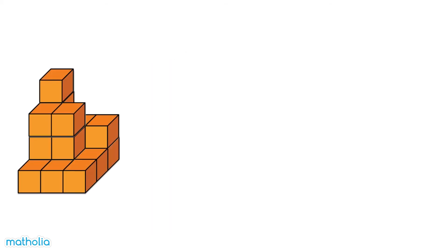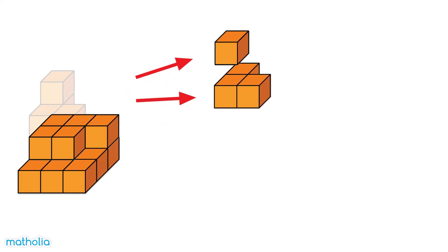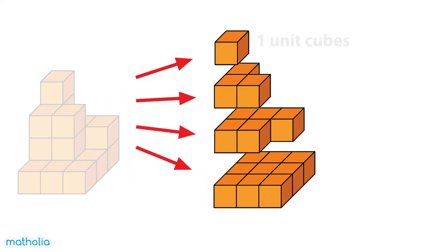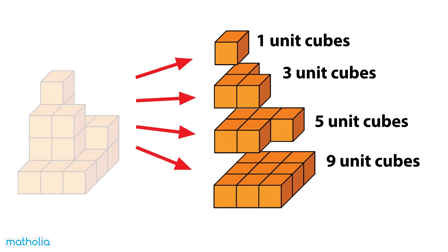Find the volume of the solid. Separate the solid into rows and count the cubes in each row. 1, add 3, add 5, add 9, make 18. The solid is made up of 18 unit cubes. Its volume is 18 cubic units.